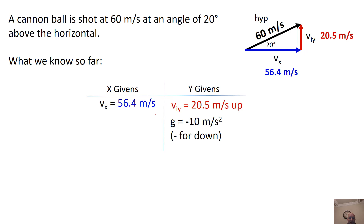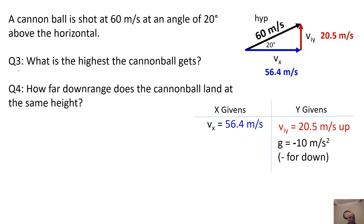We can populate a givens list right away: VX = 56.4 m/s (stays the same), VIY = 20.5 m/s upward (initial Y velocity). Since gravity acts downward and VIY is upward, they're in opposite directions, so we'll say gravity is negative. These givens apply to both parts of this problem — finding maximum height and finding how far downrange — but we'll add a different assumption for each.